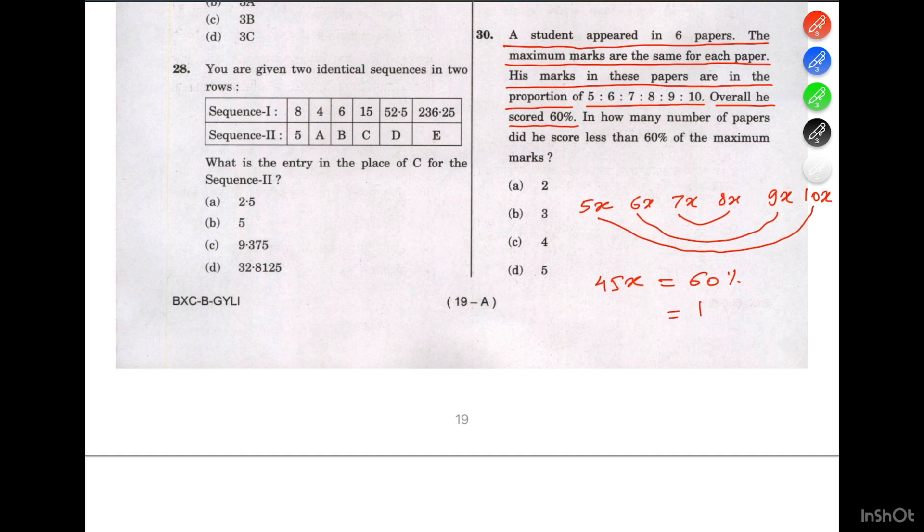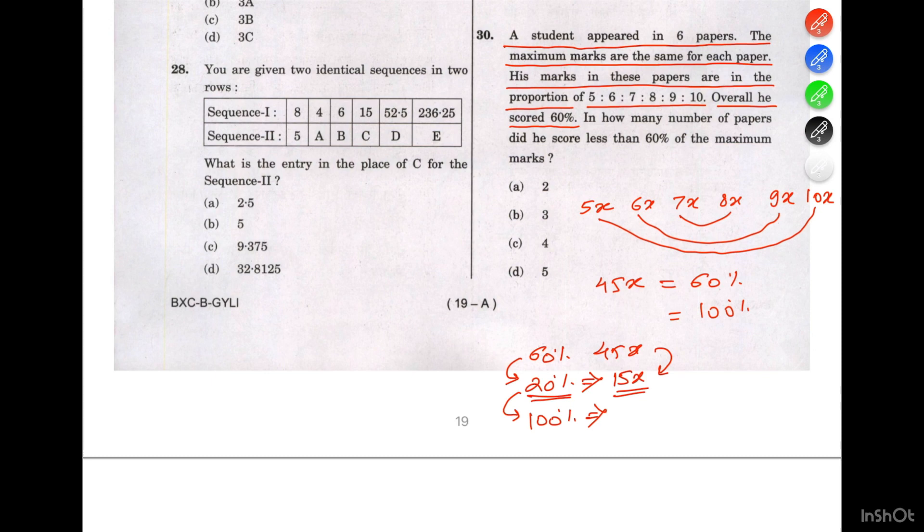Now we have to find what will be 100%. 60% is 45x, therefore 20% should be - we divide 60 by 3 to get 20%, so we have to divide 45 by 3, which is 15x. If 20% is 15x, what will be 100%? 5 times 20 is 100, so we multiply 15 by 5, which equals 75x.